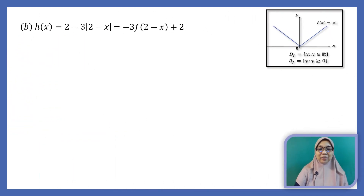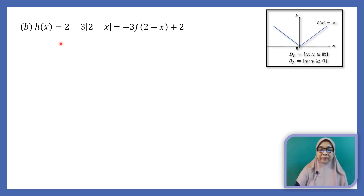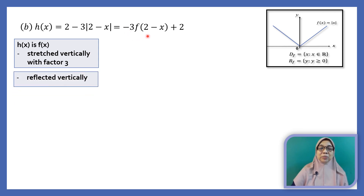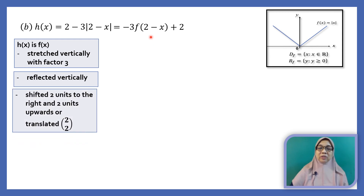The next function is h(x) equals 2 minus 3 modulus of (2 minus x). We can rewrite this as negative 3f(2 minus x) plus 2. The 3 in front of f indicates f(x) is stretched vertically with factor 3. Negative means we need to reflect the graph vertically. Setting 2 minus x to 0 gives x equals 2, meaning we shift the graph 2 units to the right. Plus 2 means the graph is shifted 2 units upwards, or a translation of (2, 2) is carried out.